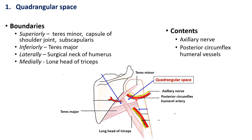The lateral boundary of the quadrangular space is formed by the surgical neck of the humerus, and the medial boundary is formed by the long head of triceps. These are the four boundaries of the quadrangular space. The contents — structures passing through it — are those related to the surgical neck of the humerus: the axillary nerve and the posterior circumflex humeral vessels.